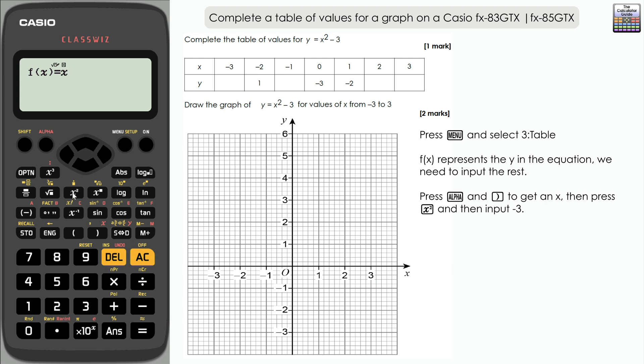By default it will come up with an option for a second function gx. We don't have that in this case, so just press equals here to go to the start, end, and step.